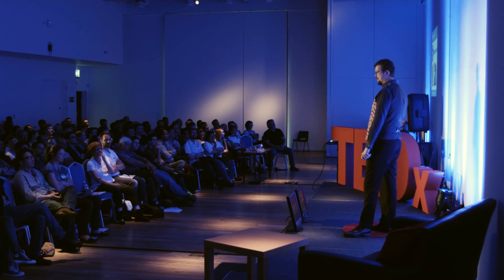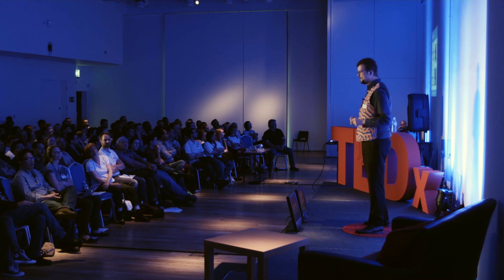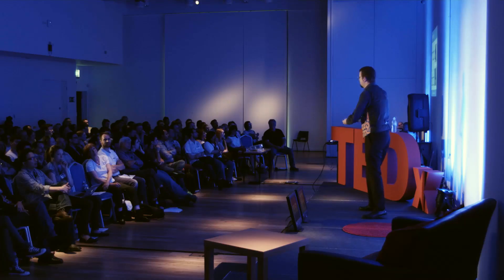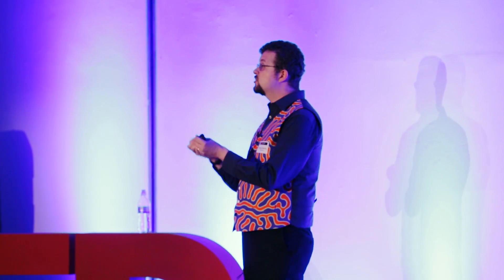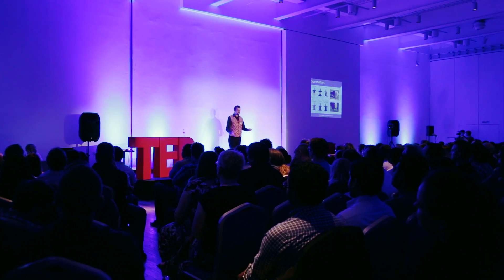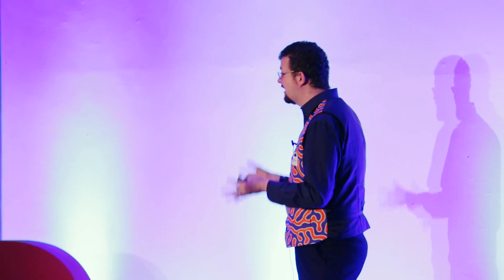We can also tell you what size does to the pattern. All these skins have been manipulated to look the same size, but they're actually different sizes — the letter S with a number tells you the relative scale. As you increase size from about 0.4 up to 14 times the reference, you go from black and white to two-tone, then blotches, then spots, and if you go even bigger, the spots eventually disappear. We see this in biology: the valet goat has one black section and one white section; the belted Galloway is black-white-black. Remarkably, the valet goat is about 40% of the size of the bull.